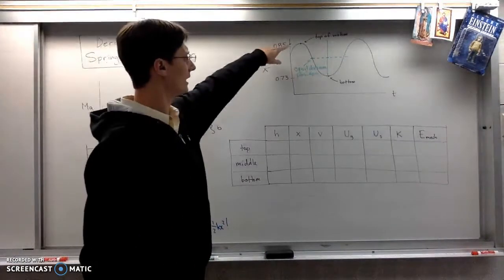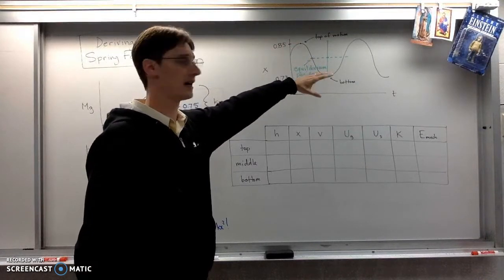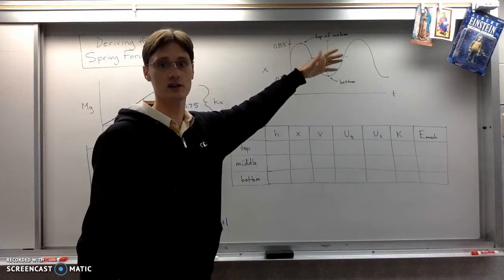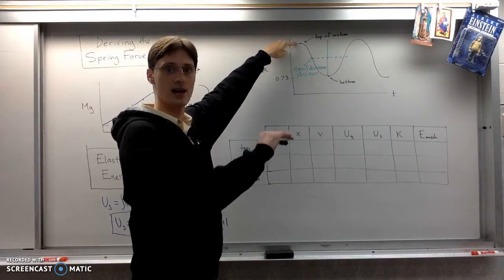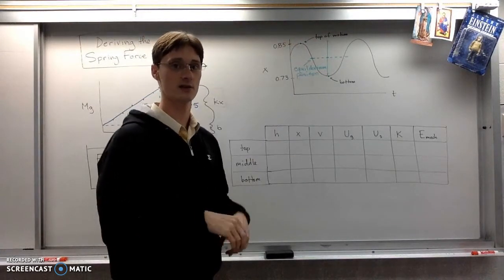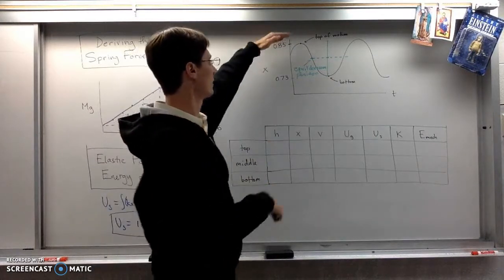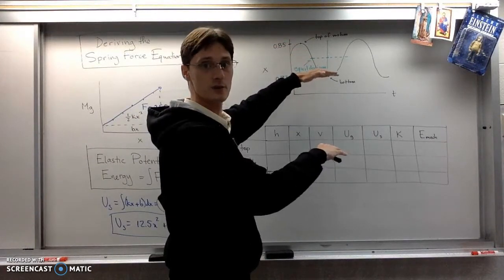All right, now I've labeled a couple of points on my oscillation here. It's some kind of a sine curve and this of course is the top of the motion when the mass was farthest away from the motion sensor.